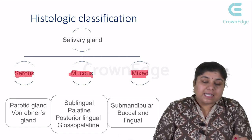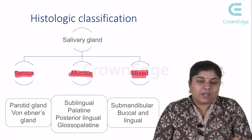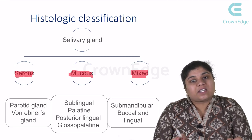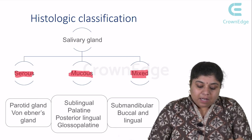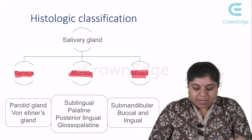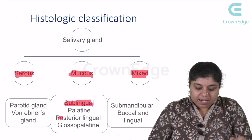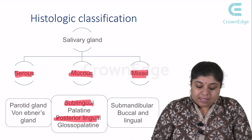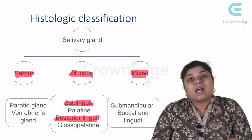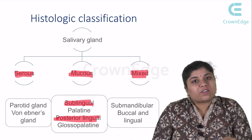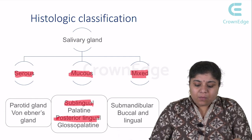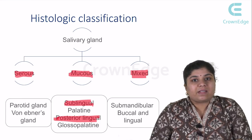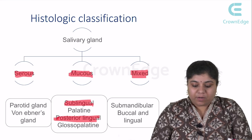For example, the parotid gland is predominantly serous secreting, whereas von Ebner's gland is a pure serous secreting salivary gland. The sublingual gland and the posterior lingual glands are predominantly mucous secreting. The palatine and glossopalatine salivary glands are purely mucous secreting. The submandibular, buccal, and lingual salivary glands are mixed salivary glands, producing both serous and mucous secretions.